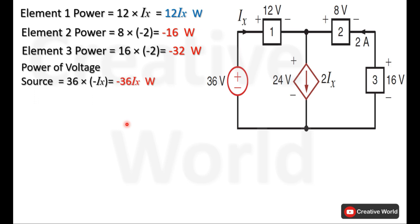Now calculate the power of the sources. First is the voltage source. The voltage source has 36 volts across it and the current through it is Ix. The power of this element will be 36 × (−Ix), and this minus is because the current is entering from the negative terminal of this element. The power of the voltage source will be −36·Ix watts, and this power is being supplied because of the negative sign.